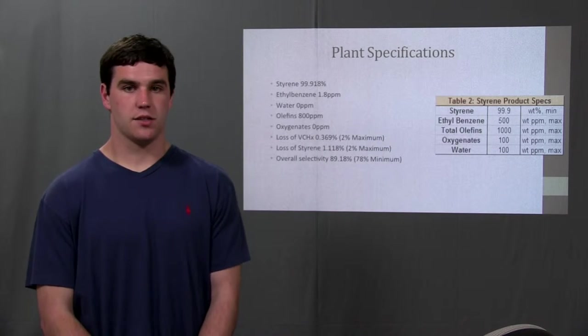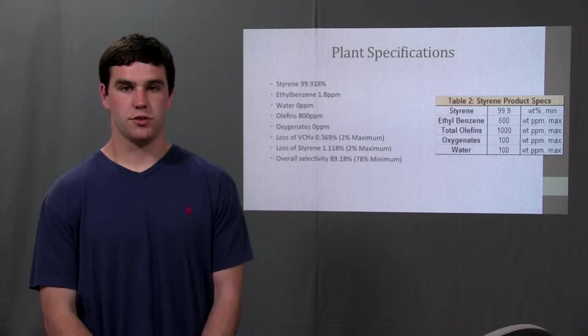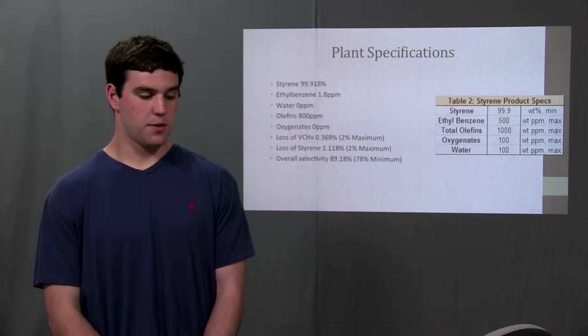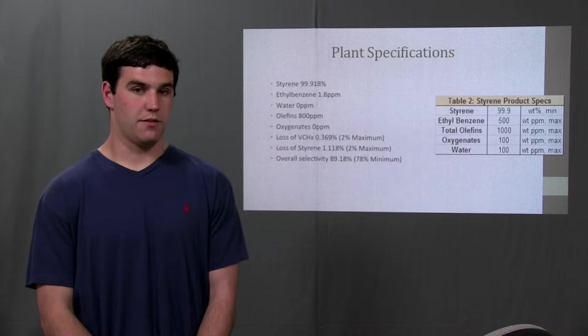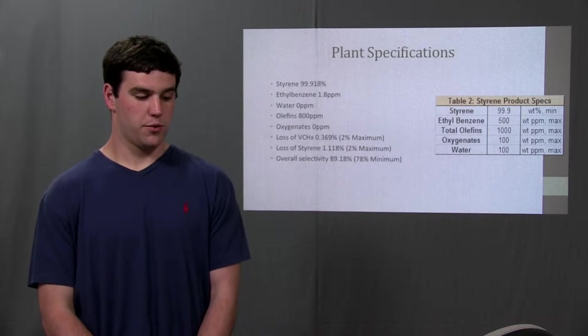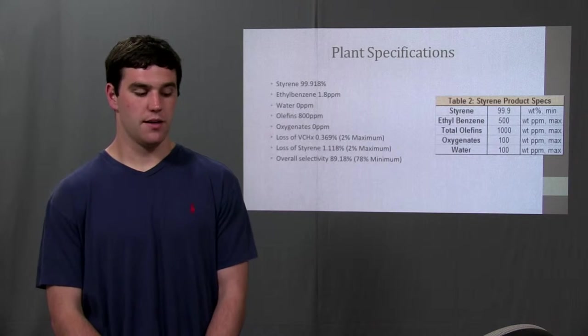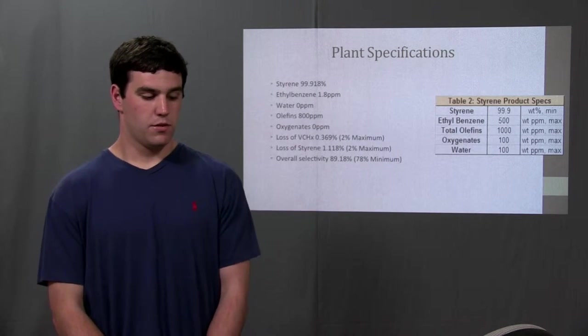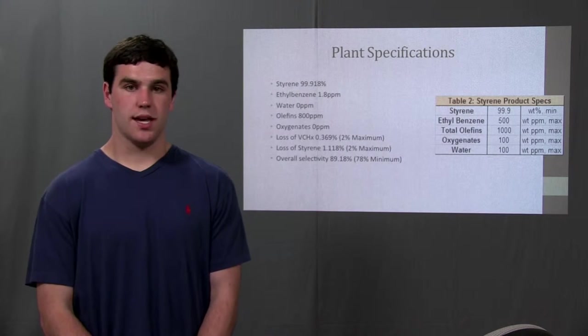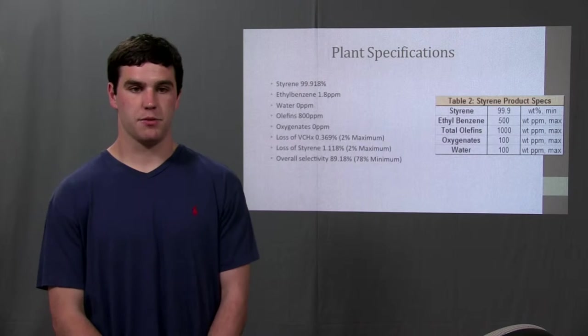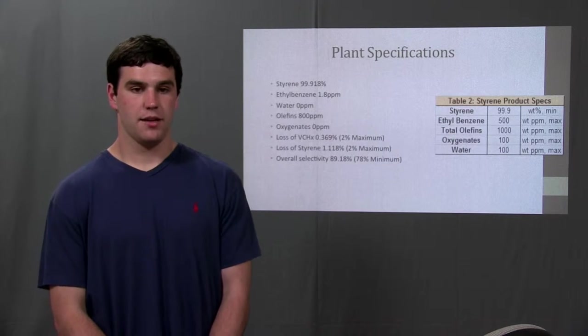Styrene and VCHX loss also needed to stay below 2% goals. The styrene loss was approximately 1.185% and the VCHX loss was 0.369%. These specs also meet the design goals. Another goal was the selectivity of butadiene to styrene which needed to meet 78%. This spec was met as well.